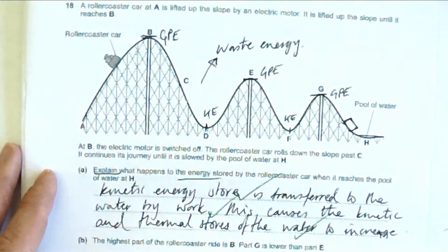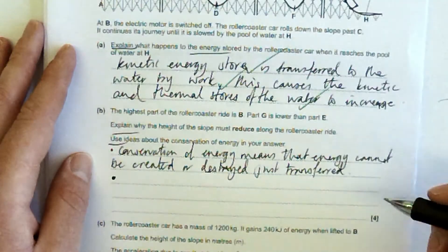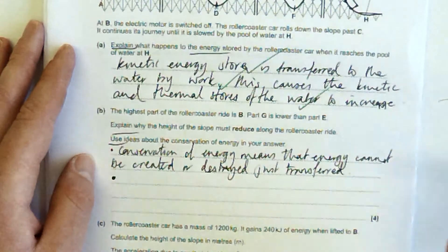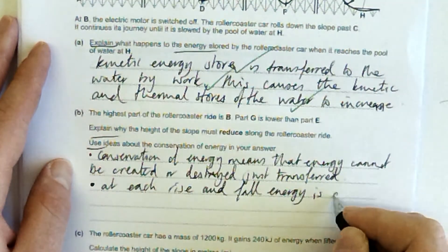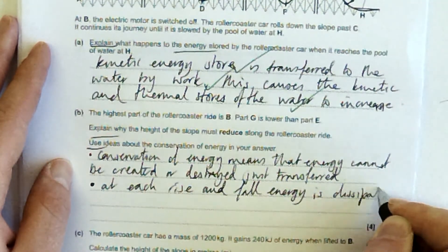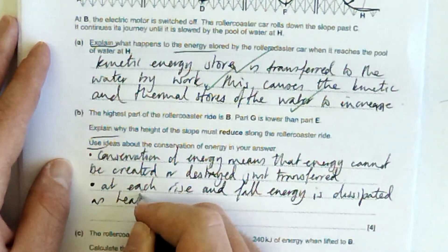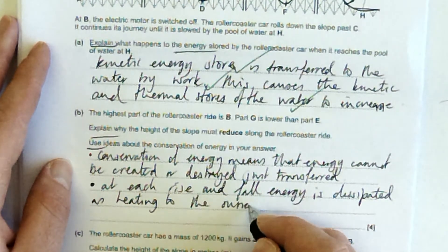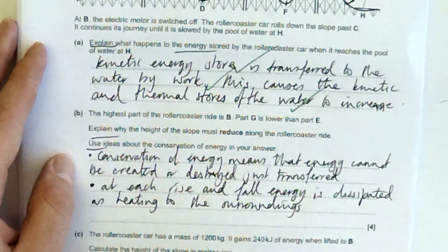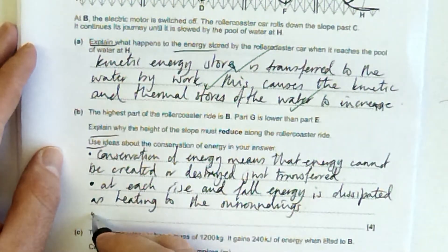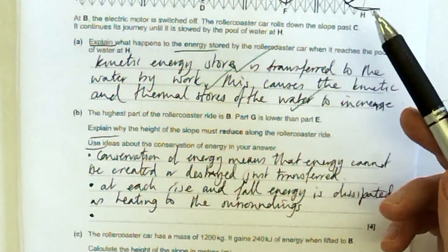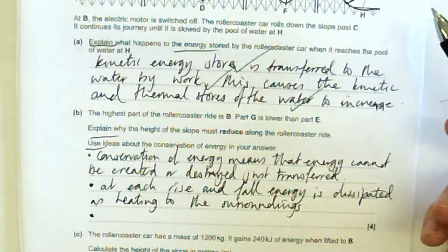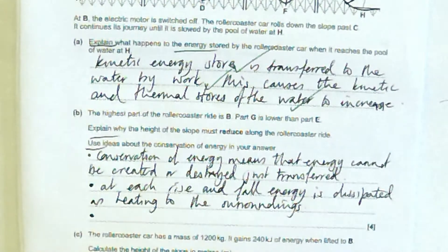So the reason why it has to get smaller is because we've got these wasted energies or transfers to the surroundings in the form of heat. So the next thing I would say is that each rise and fall, energy is transferred to the surroundings as heating. Or I would just say dissipated as heating to the surroundings. Link this back to the actual question, why is it lower? This means that there is less energy available in the car to get to a certain height at E than B and at G than E.